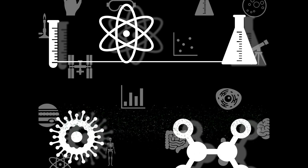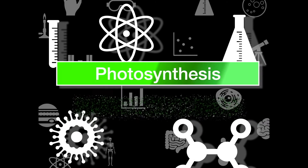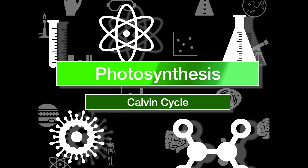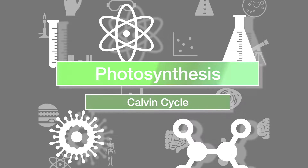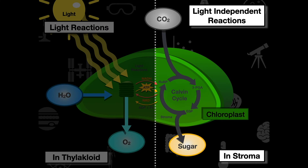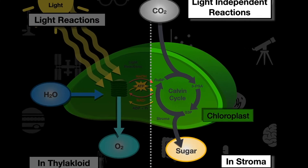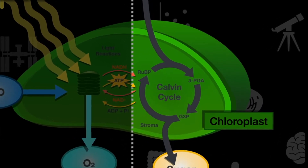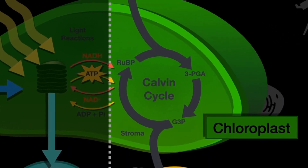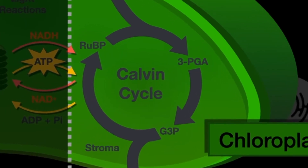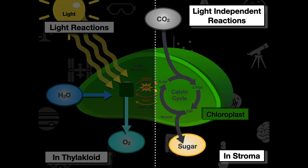This video covers photosynthesis, specifically the Calvin cycle. We are looking at the light-independent reactions in the chloroplast, because they don't require light in order to occur. However, they do require CO2 as an input in order to make sugar as the output. This takes place in the stromal space.